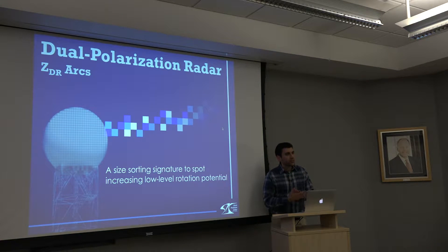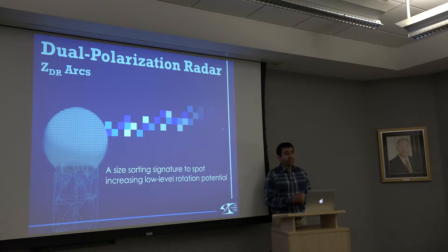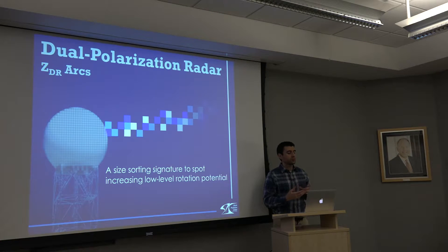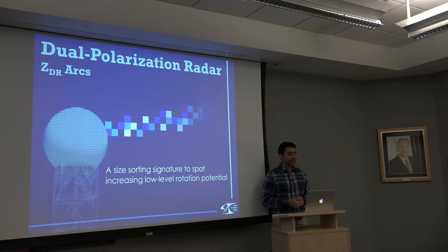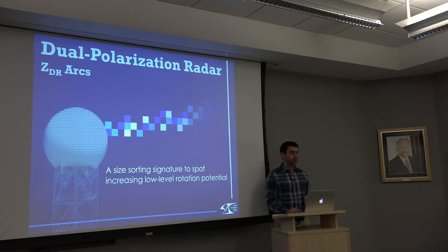Alright, so we just got done in the third presentation talking about size sorting, and this is an extension of size sorting but even more powerful in terms of what we're dealing with as a potential threat in a thunderstorm. This is what's known as the ZDR arc — a signature to spot increasing low-level rotation potential.